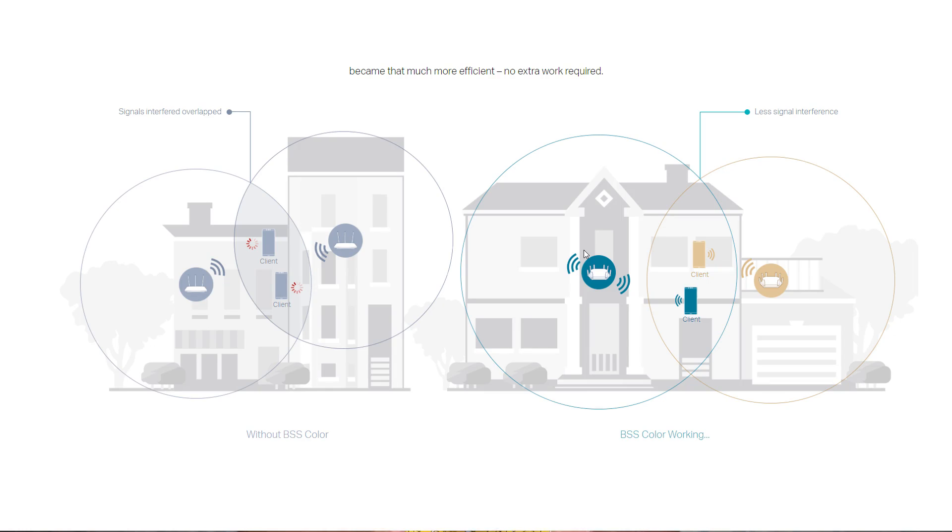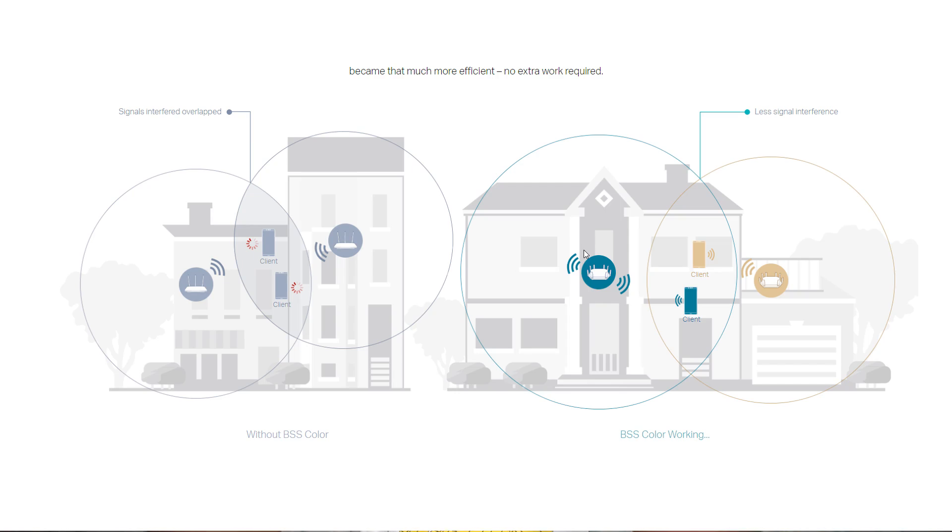This is why BSS Color was introduced. With a Wi-Fi 6 enabled router, color coding is assigned to each client. For example, the Wi-Fi 6 router is assigned a blue color. Any device connected to it can identify its data by the blue color coding. Other nearby networks may show red or yellow — each network has its own color. This way, devices can distinguish their own data from neighboring networks, reducing interference.